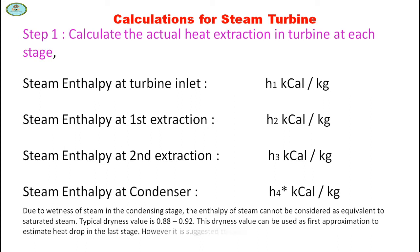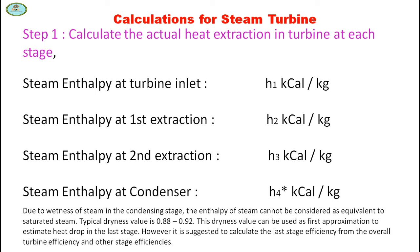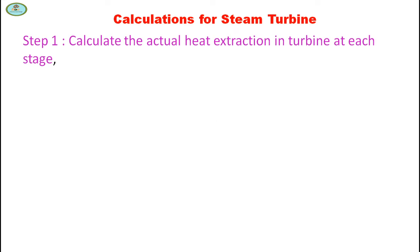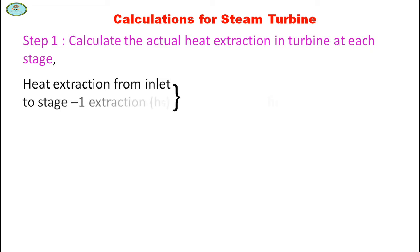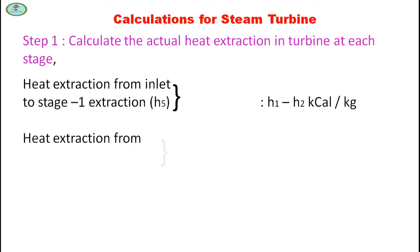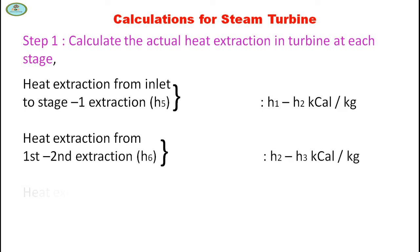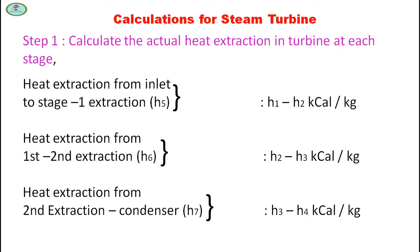This dryness value can be used as a first approximation to estimate heat drop in the last stage. However, it is suggested to calculate the last stage efficiency from the overall turbine efficiency and other stage efficiencies. Heat extraction from inlet to stage 1 extraction is H1 minus H2 kcal/kg, from first to second extraction is H2 minus H3 kcal/kg, and from second extraction to condenser is H3 minus H4 kcal/kg.